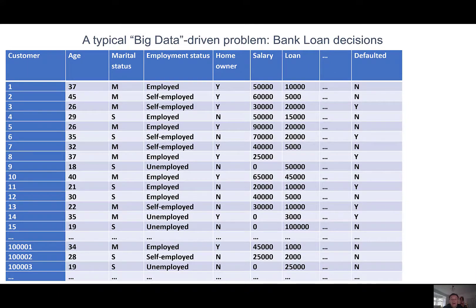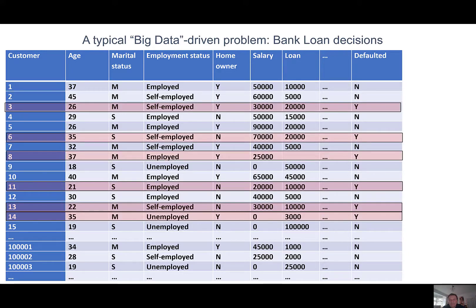Here's a typical example of a big data-driven problem where machine learning algorithms are used. Banks gather comprehensive data on customers to whom they give loans. They use this information to help them risk assess future customers — those most likely to default on a loan. What statistical machine learning algorithms do is learn what the distinguishing features are of those customers who default and how they differ from those who don't default.